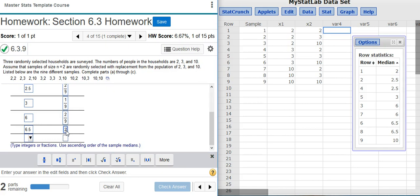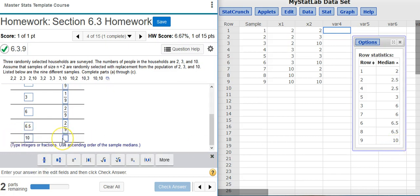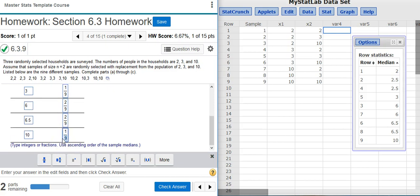The next value is 6.5, and there's 2 of those, so its probability is 2 divided by 9, and the last value is 10, and its probability is 1 divided by 9.